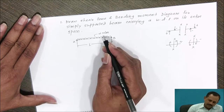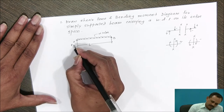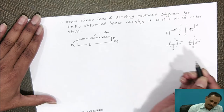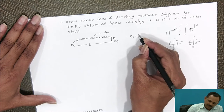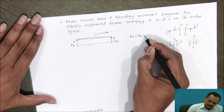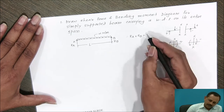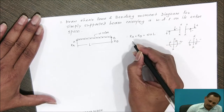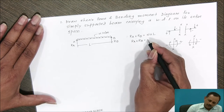This is a simply supported beam carrying UDL over its entire length. Consider reaction at A is Ra and reaction at B is Rb. Therefore, the sum of forces acting upward, Ra plus Rb, is equal to the total load acting downward. In the case of uniform distributed load, the total load is the rate of loading multiplied by the distance on which it acts, so total load acting downward is W into L.